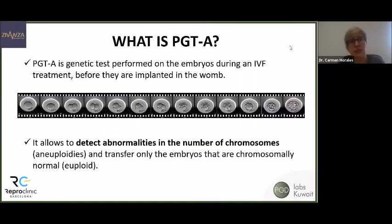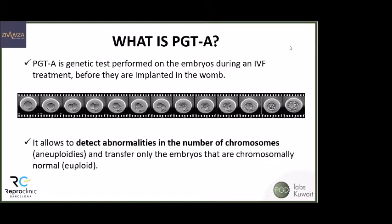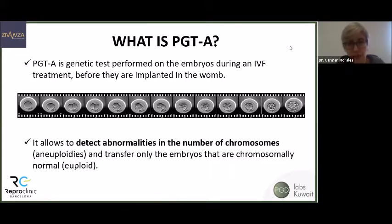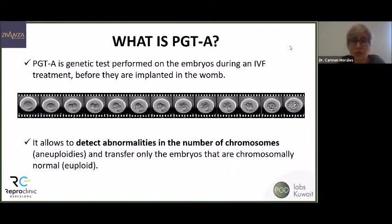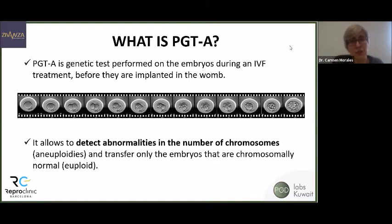What is PGT-A? It's called Preimplantation Genetic Testing for Aneuploidies. This is a genetic test performed on embryos during an IVF treatment before they are implanted in the maternal womb. This genetic test allows detection of abnormalities in the number of chromosomes of these embryos, so we can select for transfer only the embryos that are chromosomally normal — what we call euploids.